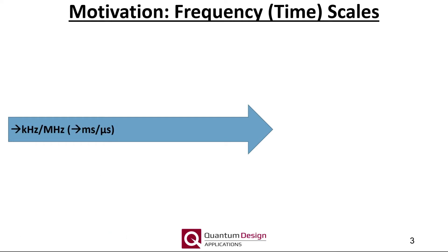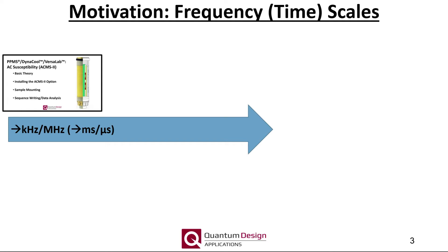As the excitation magnetic field frequency increases, we enter the realm of what is typically referred to as an AC susceptibility measurement. In an AC susceptibility measurement, we are interested in how the magnetic moment vector responds to an AC field. For example, the AC-MS2 PPMS option operates up to 10 kHz and is discussed at length in our AC-MS2 webinar, also found on YouTube. AC susceptibility measurements have found great utility in the study of spin glasses, superparamagnetic nanoparticles, and of course, superconductors. Note, while not offered for the PPMS product line, AC susceptibility measurements can be performed well into the megahertz range.